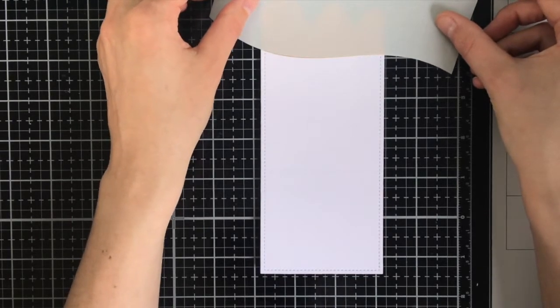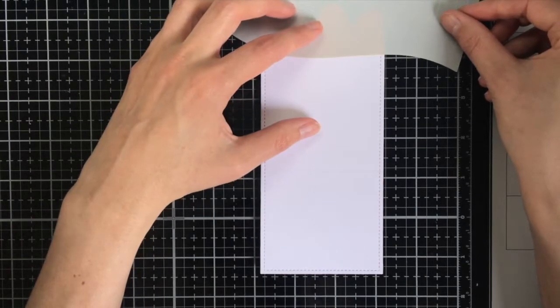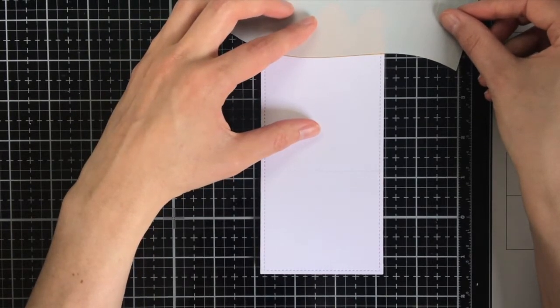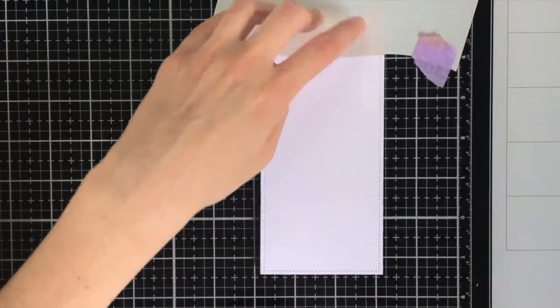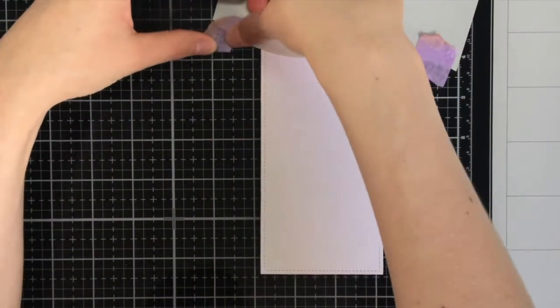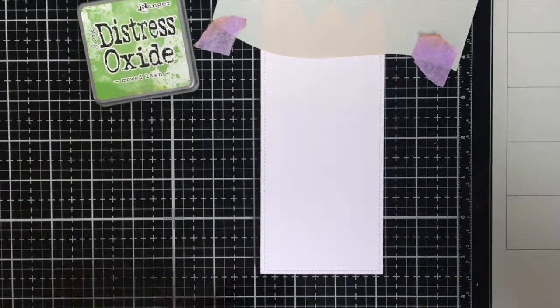What I also love about the stencil is that you can use it for the ink blending, but you can also use it to basically mask off the ink blended area, as I'm doing now. So I repositioned the stencil to make sure that the mountains are covered up and I keep it in place with some purple tape.